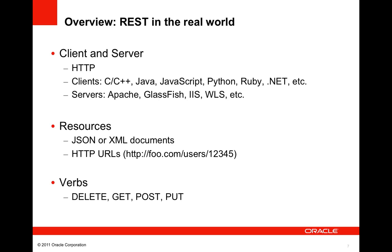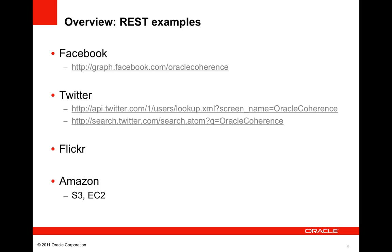Resources are identified by HTTP URLs and are typically represented by JSON or XML documents. Resources are manipulated using the standard HTTP verbs: DELETE, GET, POST, and PUT. REST is becoming an increasingly popular architecture for exposing state and functionality on the web. Many large web services today are exposed via REST APIs, including Facebook, Twitter, Flickr, and Amazon S3 and EC2 — a trend that will most likely continue at an accelerated pace.